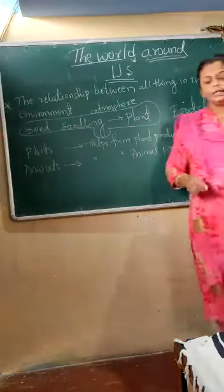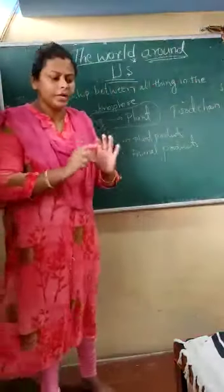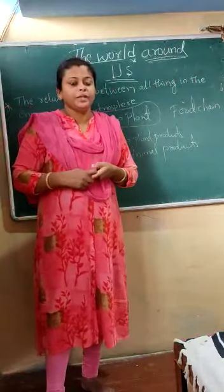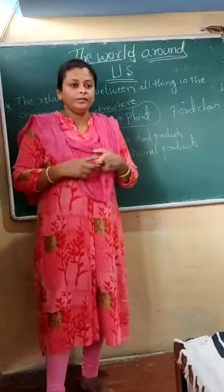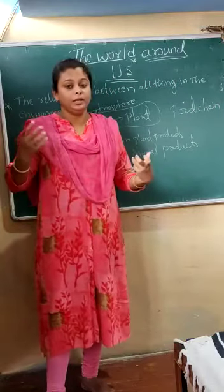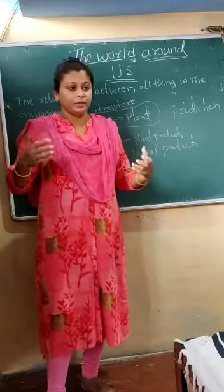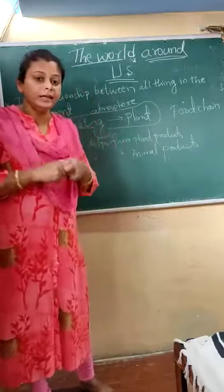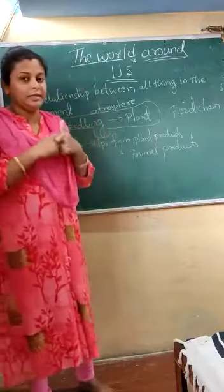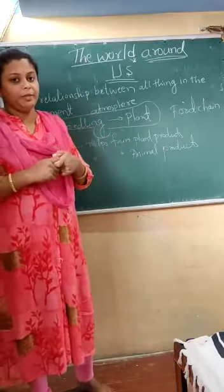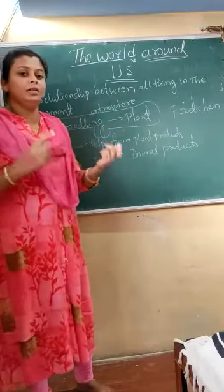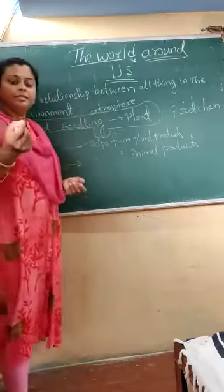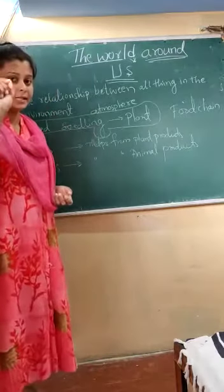The relationship between each and everything in the environment is just like a chain. One substance will not be independent by leaving the other substance — it is just like a chain. There is a chain relationship between all things. For example, we will start from the small seed.